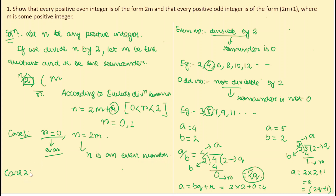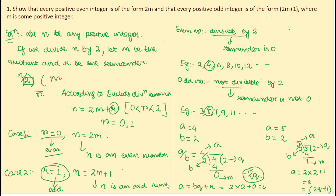Case 2: when r = 1, n = 2m + 1, which means n is an odd number. So any number represented as n = 2m is even, and any number represented as n = 2m + 1 is odd.